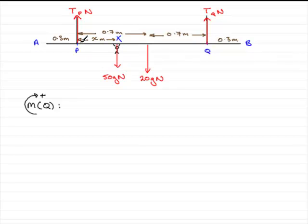So taking moments, if we start then with the tension in this rope here at P, we've got the force TP multiplied by the distance, the perpendicular distance to Q. Well, that's going to be 0.7 plus 0.7, in other words, 1.4. So we've got TP times 1.4. That's the moment then of this force.